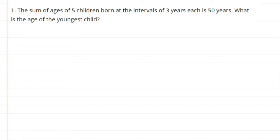From this we know that the sum of 5 children — let the youngest child be x. The interval was 3 years, so the next child will be at the interval of x plus 3.